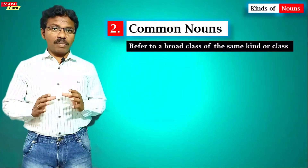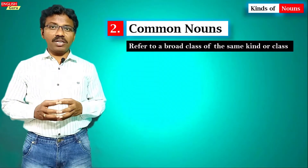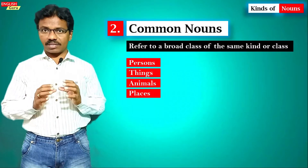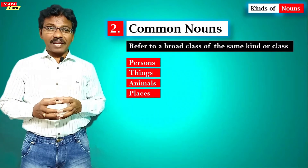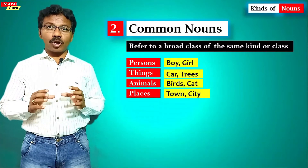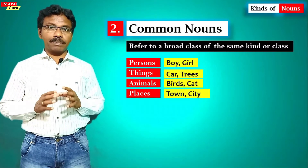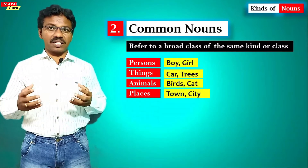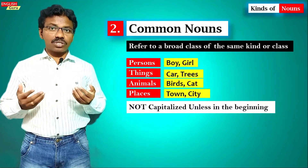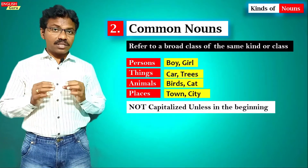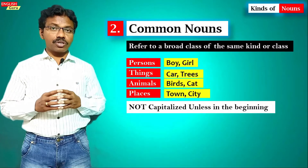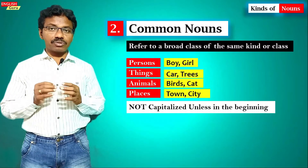The second one is common nouns. Common nouns refer to a broad class of the same kind, like persons, things, animals, and places. Persons like boy and girl, things like car and trees, animals like bird and cats, places like village, town, and city. These are not capitalized wherever they come — we should not start common nouns with a capital letter.